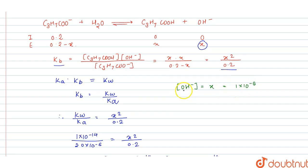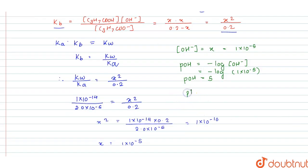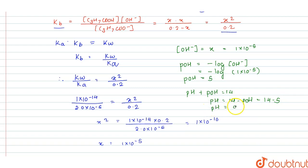From the OH⁻ ion concentration, we calculate POH: POH = −log[OH⁻] = −log(1 × 10⁻⁵) = 5. Using pH + POH = 14, pH = 14 − 5 = 9. So the pH of this solution is 9 and the hydroxide ion concentration is 1 × 10⁻⁵.